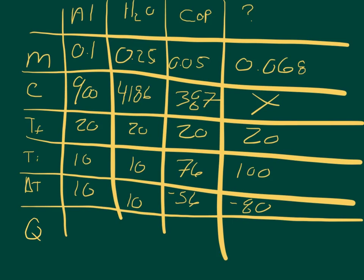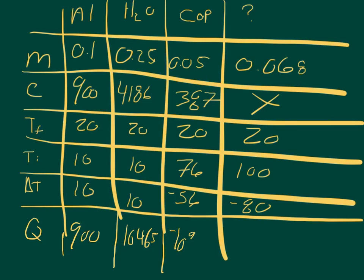At this point I can calculate the Q values, since Q equals mass times specific heat capacity times change in temperature. The Q for aluminum is 900 joules transferred into the aluminum. For water, it's 10,465 joules. For copper, it's negative 1,083.6 joules. For the unknown sample, we cannot calculate it yet because we do not know the specific heat capacity.